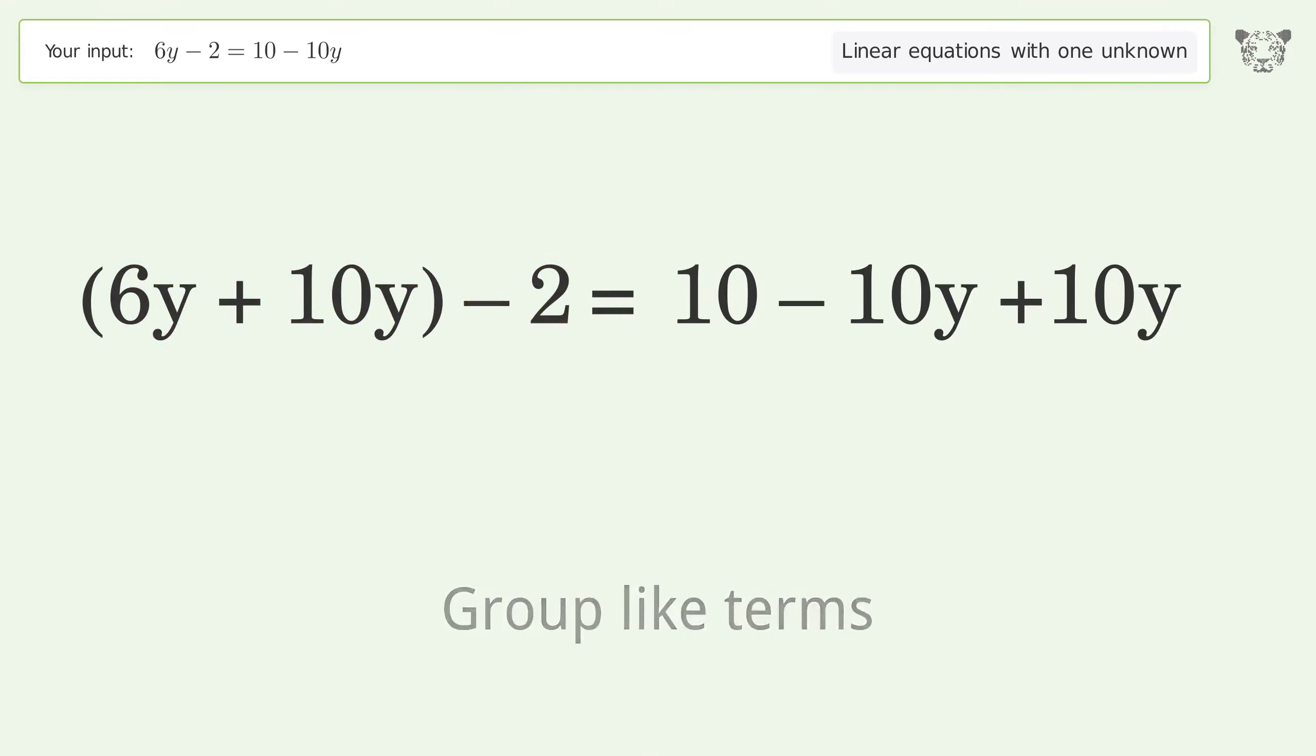Group like terms. Simplify the arithmetic. Group all constants on the right side of the equation. Add 2 to both sides. Simplify the arithmetic.